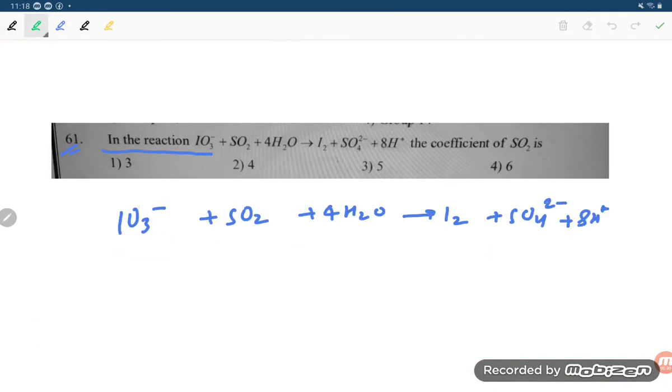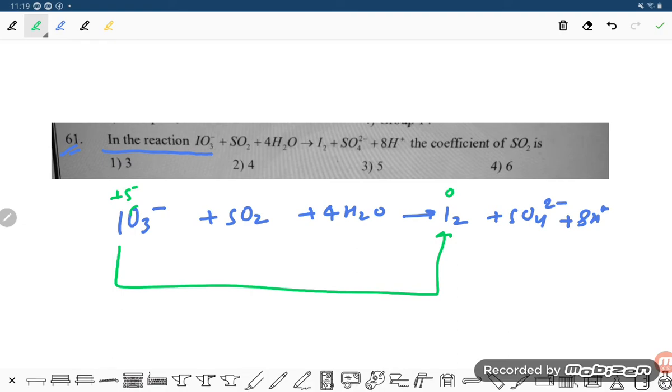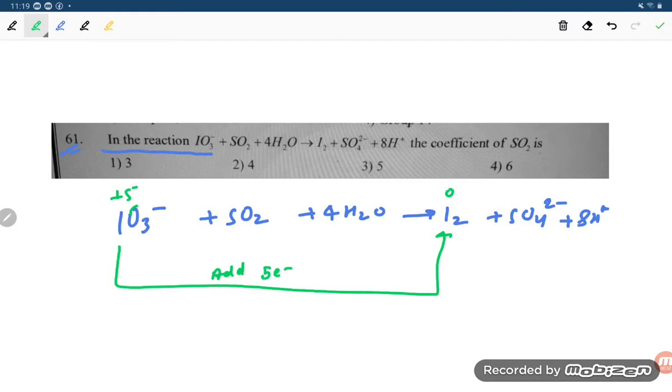So here is plus 5 oxidation number, here is 0. So plus 5 to 0 student. So what is happening? Add 5 electrons.